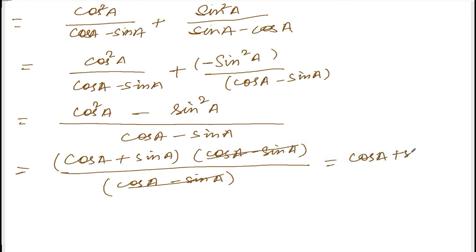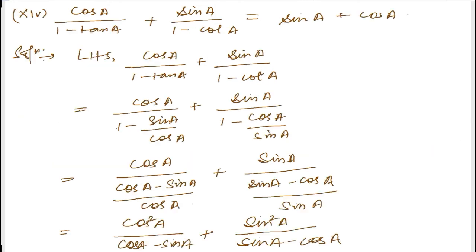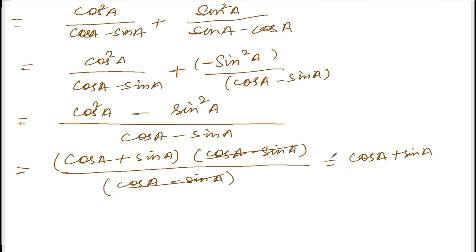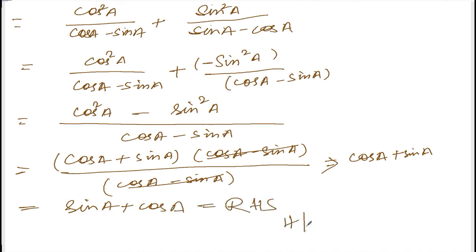What's left is cos(a) plus sin(a), which equals sin(a) plus cos(a) — the right hand side. Hence proved. I hope you understood and I haven't complicated anything. If you find any difficulty, please write in the comments below. Thank you so much.